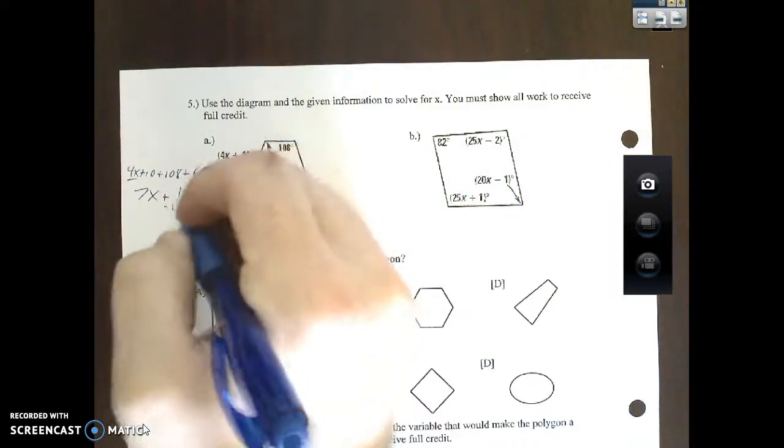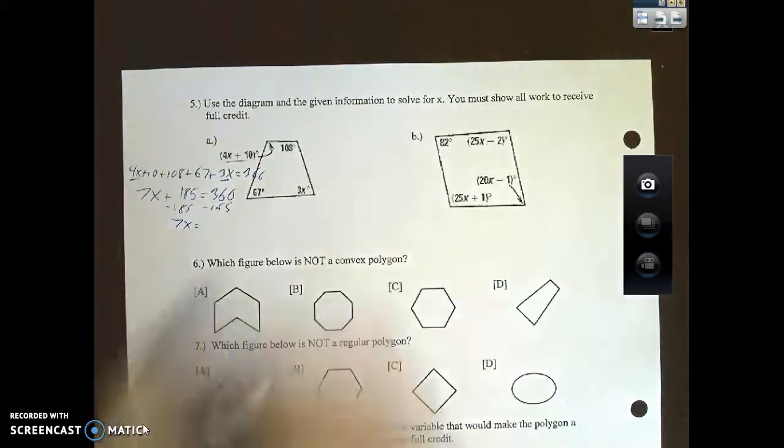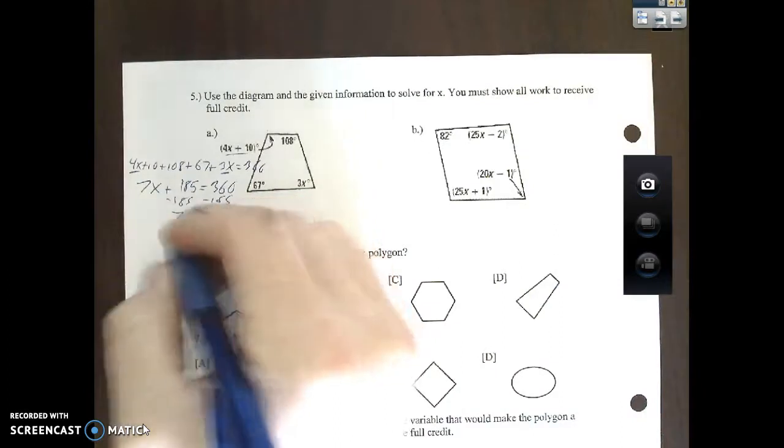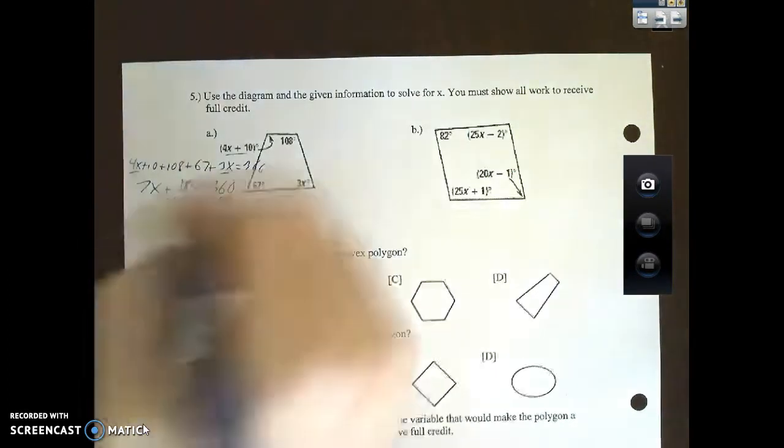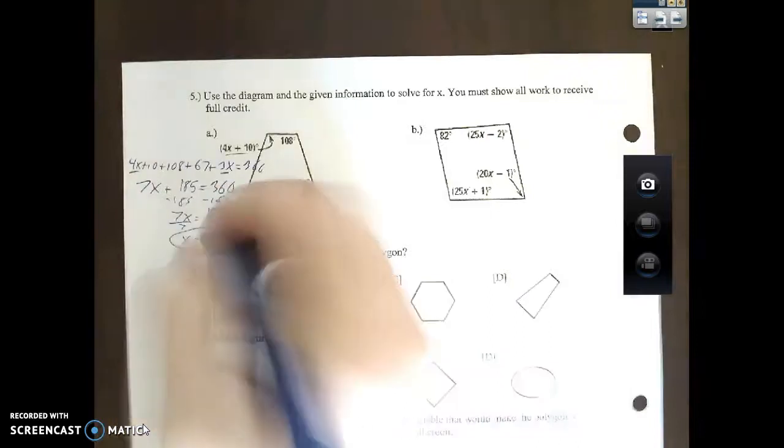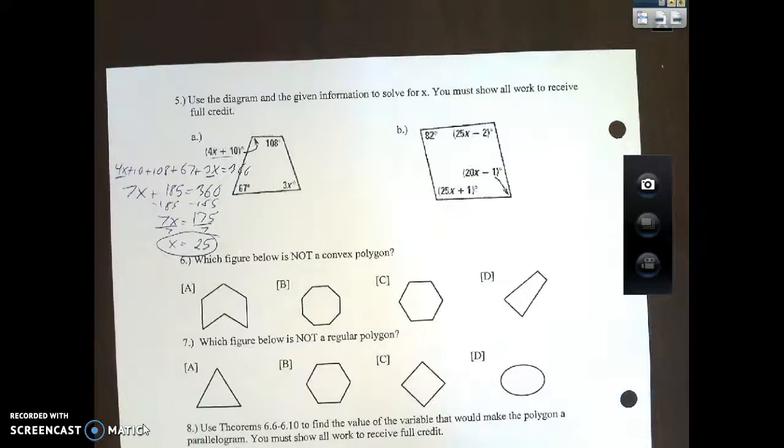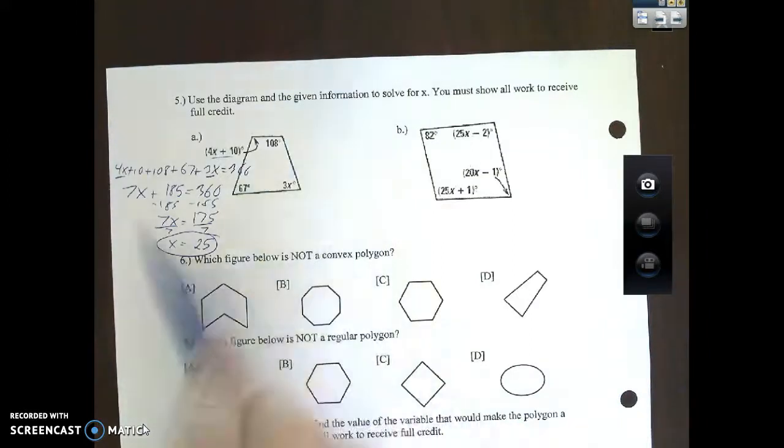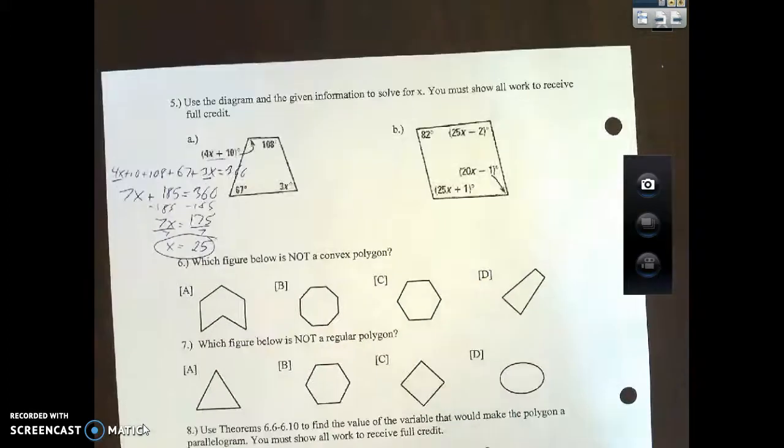Subtract 185 over, we get 175, and divide by 7, x equals 25. Start to get used to working with bigger numbers like this. You guys are going to algebra 2 very soon, so you're going to be working with equations that are higher order.